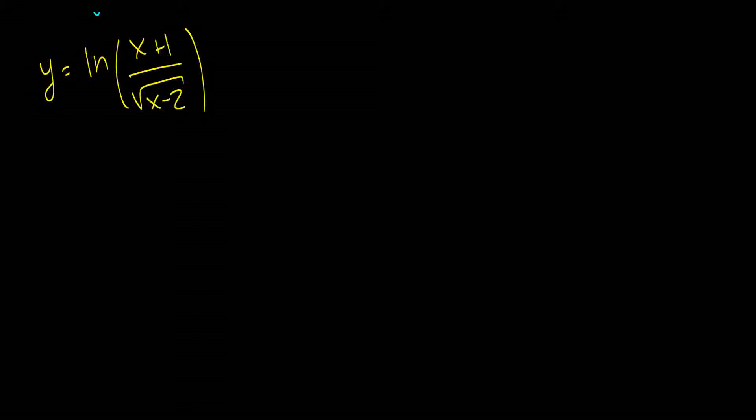Problem number 2. Let's take the derivative of the natural log of x plus 1 divided by the square root of x minus 2. Now, this looks a little crazy. But, we do have something called the laws of logarithms. And what do these say? Well, if we have the natural log of a times b, this is equal to log a plus log b. And if we have the natural log of a divided by b, this is equal to the natural log of a minus the natural log of b. And another one, if you have ln of a to the c, this is the same thing as saying c times ln of a.